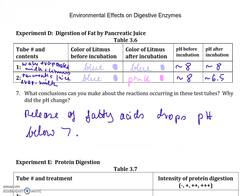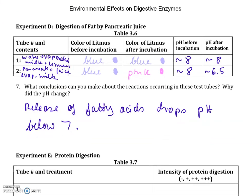Moving on to experiment D: the digestion of fat by pancreatic juice. In pancreatic juice we have the enzyme lipase, which will digest fat. We're using extra-fat evaporated milk, which has about 30% fat. Test tube number 1 contains water, evaporated milk, and the litmus reagent, and we're going to add sodium hydroxide to both test tubes to bring the pH to about 8 before incubation.